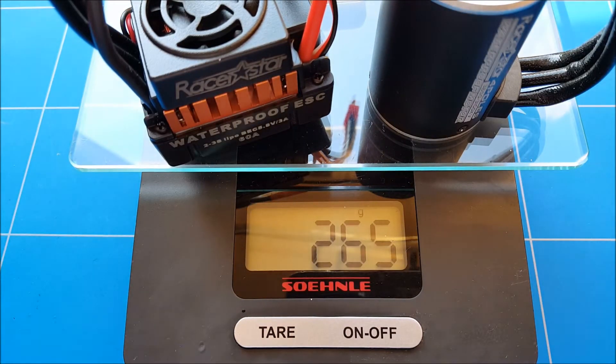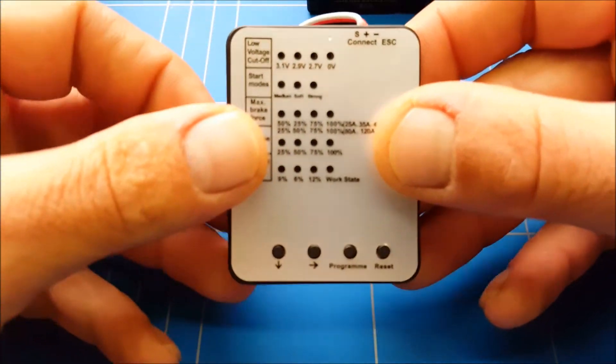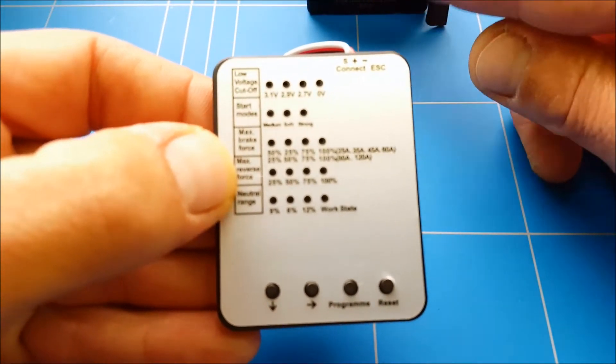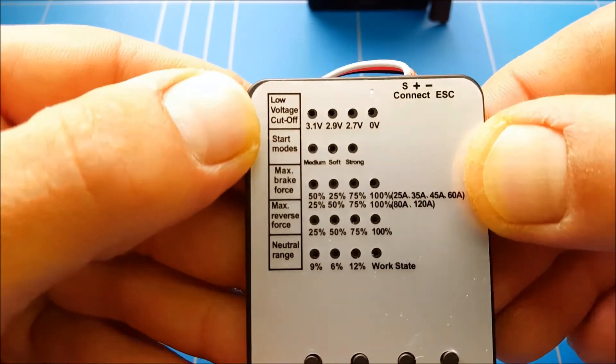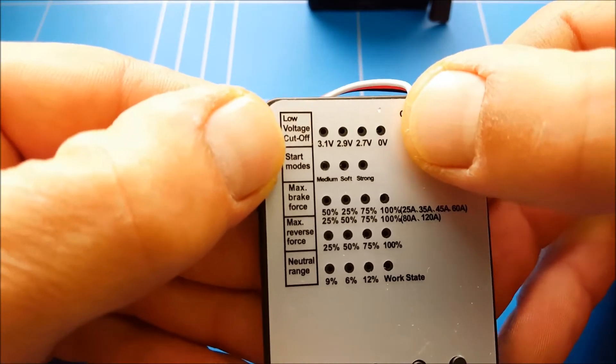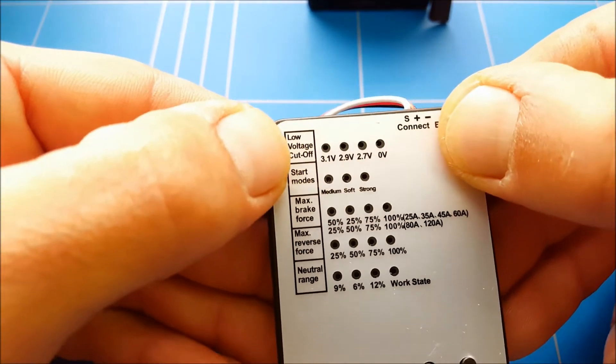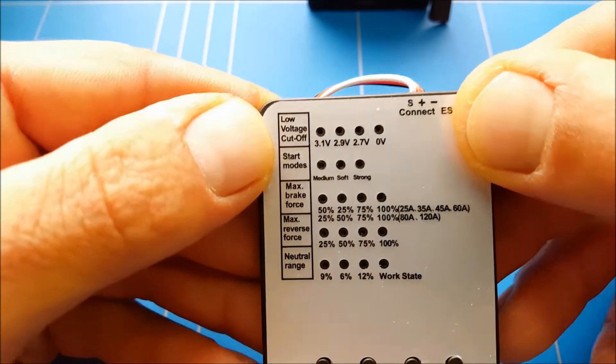Together it's a setup of 265 grams. To program that ESC, you need a programming card because there's no programming button on the ESC. With the programming card, you've got a low voltage cutoff that is a bit on the low side - 2.7 to 2.1 volts. I would prefer 3.5 actually, but 3.3 as a minimum would be a lot better.